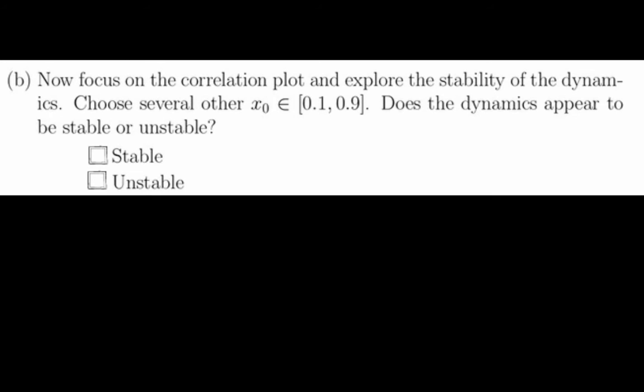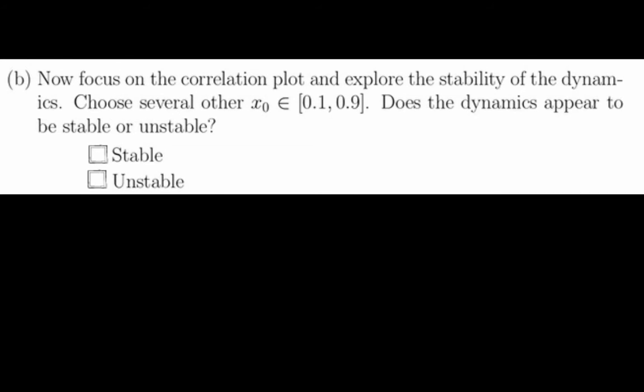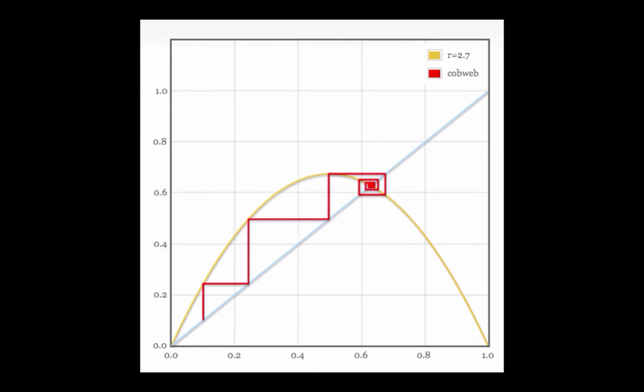Part B asks us to use the correlation plot to analyze the stability of these dynamics by choosing several initial conditions between 0.1 and 0.9. To do a basic analysis of stability, let's apply several different initial conditions to the parameter r equals 2.7.